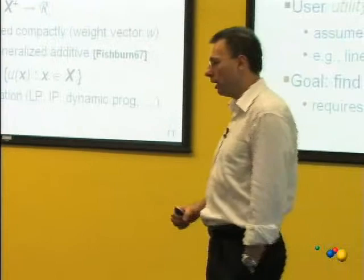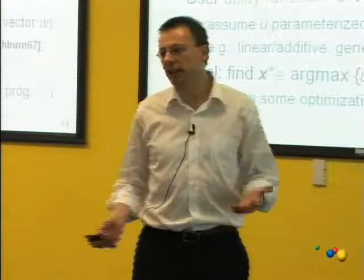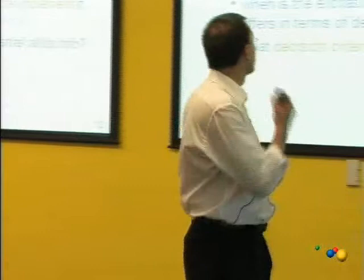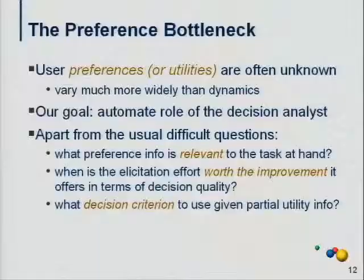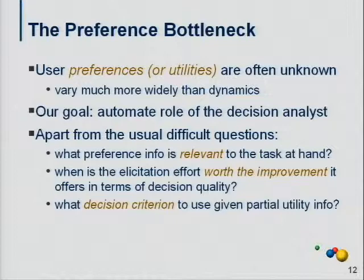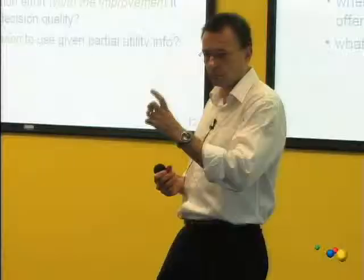That's the classic decision problem. But of course user preferences are often unknown and vary much more widely than dynamics. It's very hard to predict what a particular user will want us to do. This is basically the preference bottleneck I've alluded to. My personal goal is to automate the role of the decision analyst — I would love to have a decision analyst sitting on my desktop. Of course, decision analysts face very difficult questions. We know that people have a very hard time articulating their preferences with any degree of precision, certainly numerical preferences, and we're going to have to account for that.